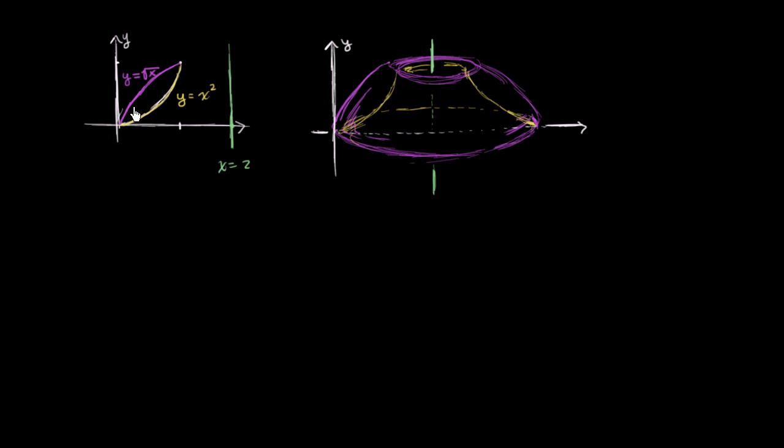So what we do is we have the region between these two curves, y is equal to square root of x and y is equal to x squared. And we're going to rotate it around the vertical line x equals 2. And we're going to do that, and the interval that we're going to rotate the space between these two curves is the interval between when square root of x is greater than x squared. And so it's between 0 and 1.